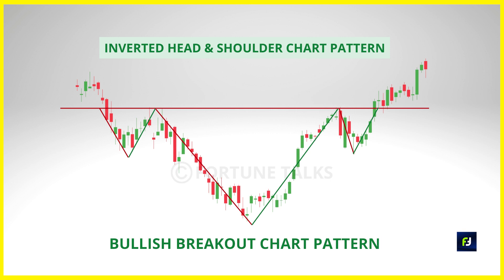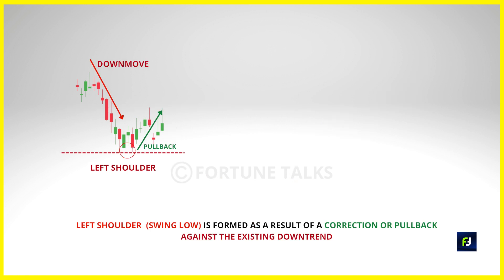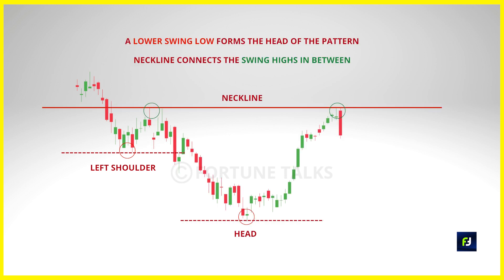The inverse head and shoulders — also called the inverted or reverse head and shoulders — is a bullish reversal chart pattern that signals that buyers are in control. It is just like a mirror reflection of the head and shoulders pattern. The left shoulder results from a pullback against the downtrend due to profit booking or eager buyers, but sellers are still in control as they push prices lower. However, buyers are stepping in, which explains the stronger pullback to retest the previous swing high level, which forms the head. This suggests that sellers are getting weak while buyers are getting stronger.